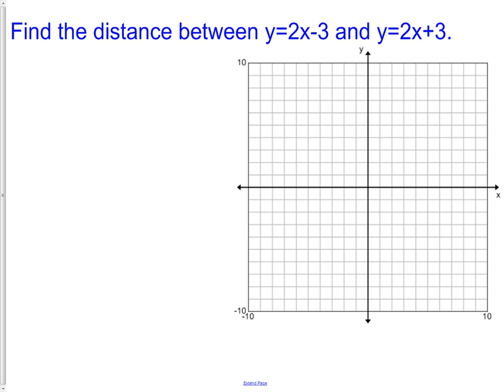Next, we want to calculate the distance between two parallel lines. How did I know they were parallel? Well, I noticed the slope of this one was 2, and this one was also 2. The first thing you need to do is graph the two lines.